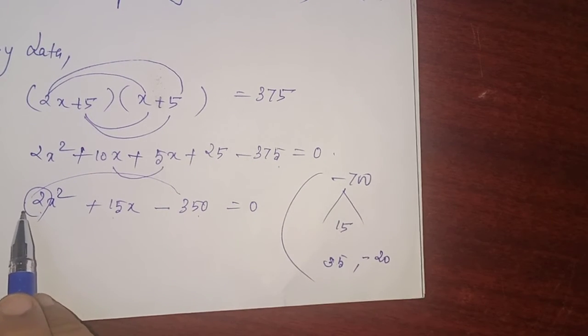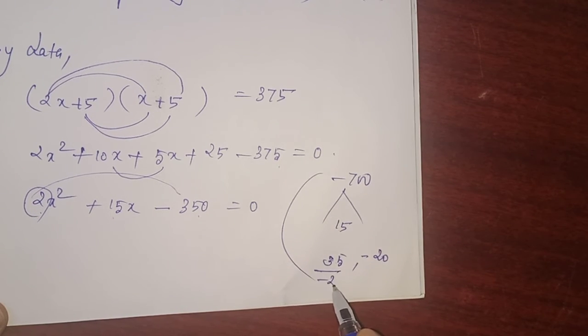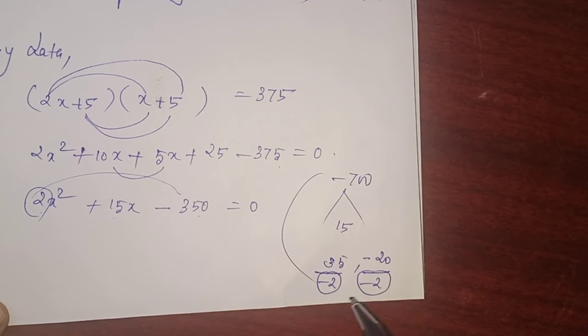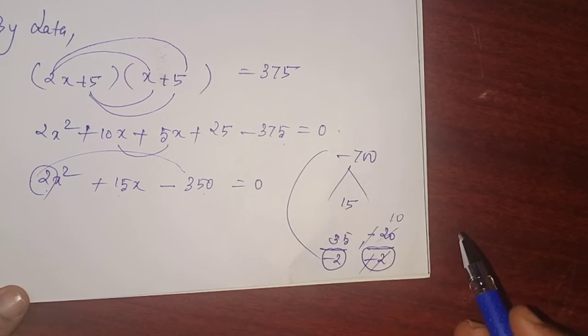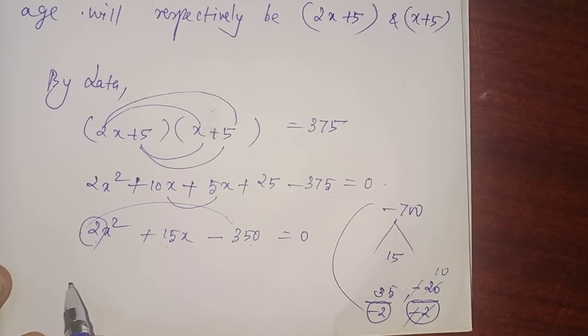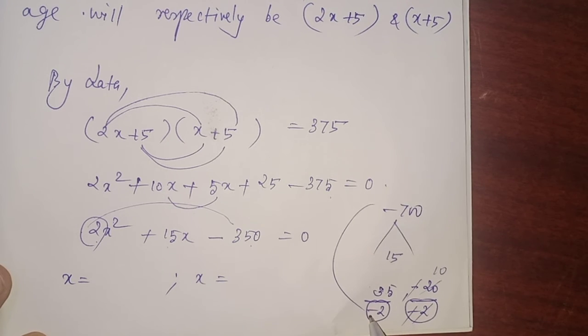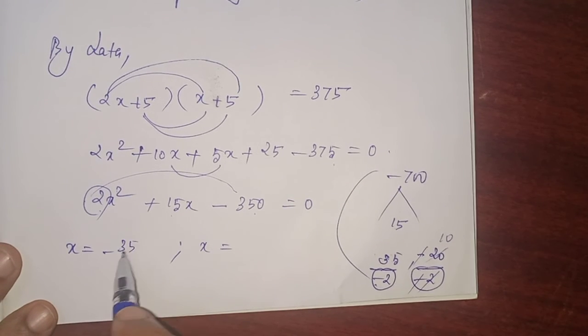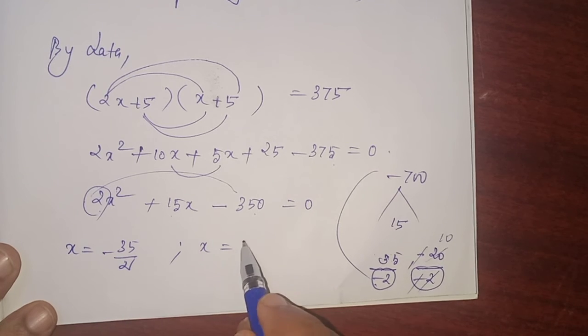Here, the coefficient of x squared is 2. Change the sign. 2 becomes minus 2. Write in denominator. Then simplify. This one cannot be simplified, but this can be simplified by 2. How many times? 10 times. Since it is a quadratic equation, you can write the values of x directly. x equals minus 35 by 2, and minus minus get cancelled 10. 1, 10 by 1, that is 10.